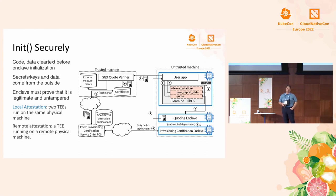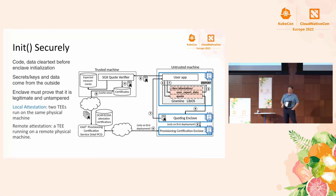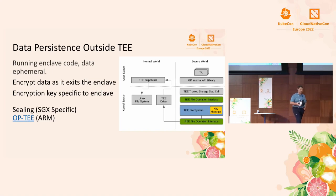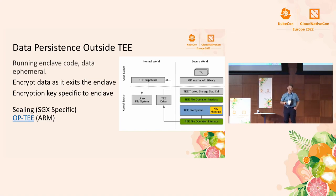If you need to attest to a global registry to move data across CPUs, you're usually attesting to something like an Intel registry — that's why they've embedded their public key in the chip. There's also a quoting enclave that manages verification to the global registry. For data persistence, SGX and others have a scheme for sealing data — you call special routines that encrypt it with a key derived from the enclave, persist it outside the enclave, and restore it back in for later use.